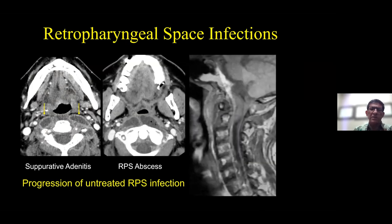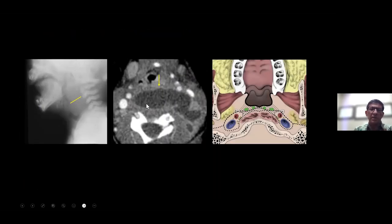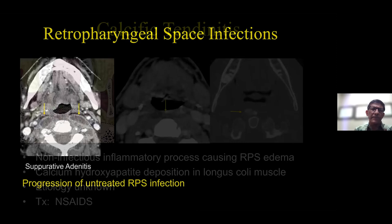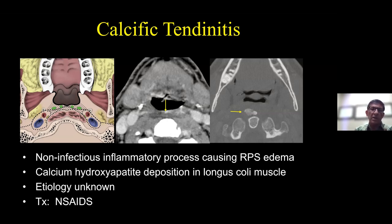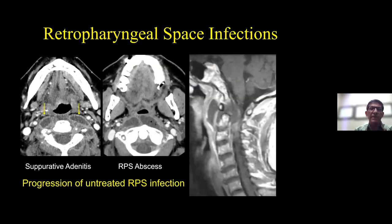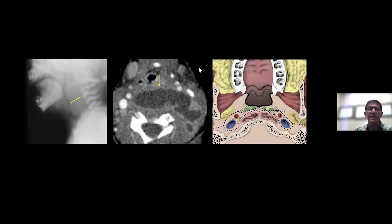When looking at retropharyngeal space abscesses, there's fluid that is midline and has much more mass effect — a definable collection. Retropharyngeal space edema is not as well defined and is more symmetric and separated. If you don't see a lot of head and neck imaging and you're not sure, it's always better to err on the conservative side and suggest the possibility of an abscess. You don't want to say something is not an abscess and be wrong, because that can lead to more problems.